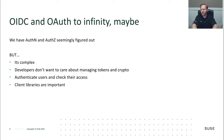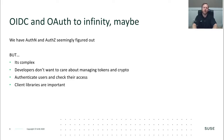OIDC and OAuth — to infinity and beyond, maybe. We have AuthN, we've got AuthZ, and we've got that somewhat figured out, but it is complex. It's not something you just go and start using — you have to learn how it works and how to program for OAuth and OIDC. For developers it can be very complex. They don't really want to manage tokens or cryptography, but they want to authenticate users and check their access. They need some sort of client library to make that really easy.